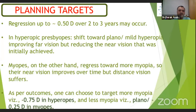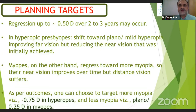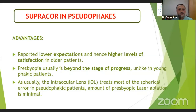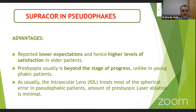As Dr. Kumar said, regression up to 0.5 is expected — the usual flattening effect occurs in the next 2-3 years. Whenever you plan the treatment, keep these factors in mind and modify your treatment accordingly. I have done SupraCore in pseudophakes also, and comparatively these people have lesser expectations. Even if they improve up to N8, it's a very good thing for them because at that age, it actually helps them to have a good near vision.